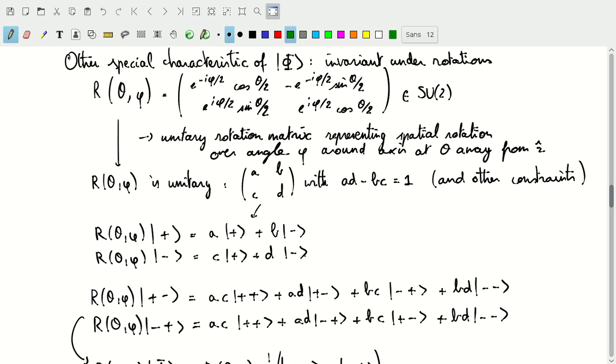Now let's look at what happens when we construct these new basis factors: |+->, and |-+>, in the tensor product of our spaces. So the rotation on the |+-> state, that will give us the combination that has, for the |++>, we get ac.